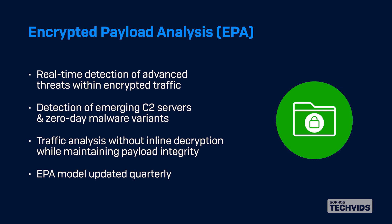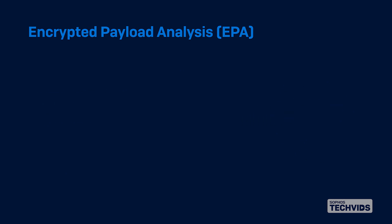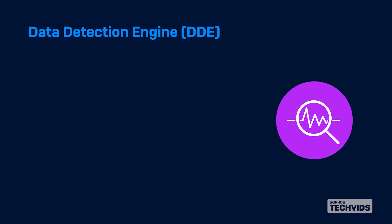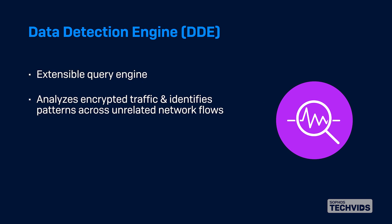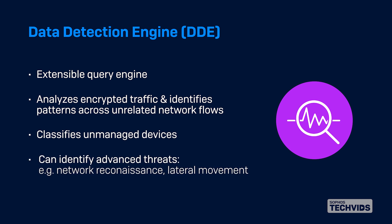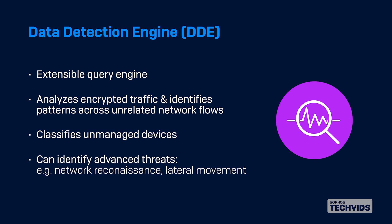The EPA model is updated quarterly to ensure you're protected against new threats. Then there's the data detection engine, or DDE, which is an extensible query engine that analyzes encrypted traffic and identifies patterns across unrelated network flows. Using this technology, Sophos NDR can classify unmanaged devices and identify advanced threats like network reconnaissance and lateral movement.